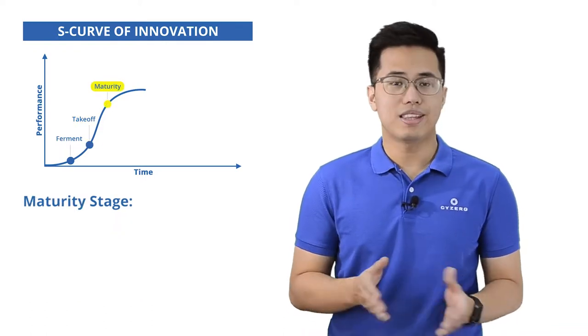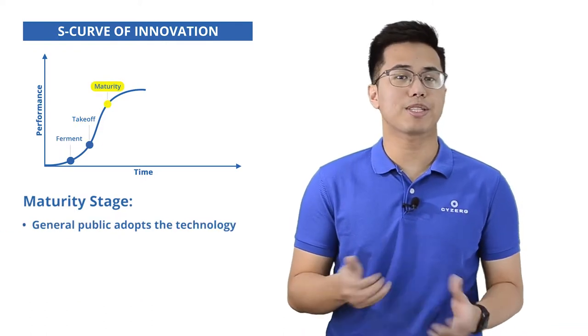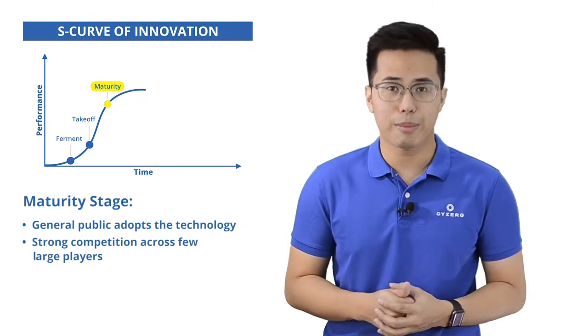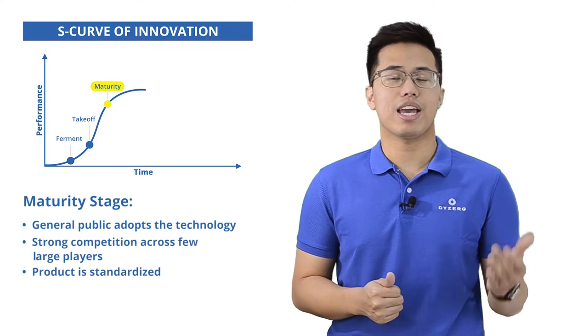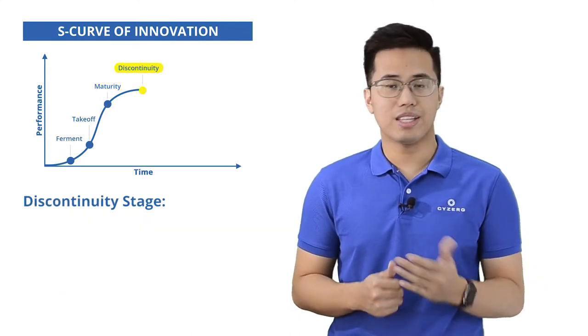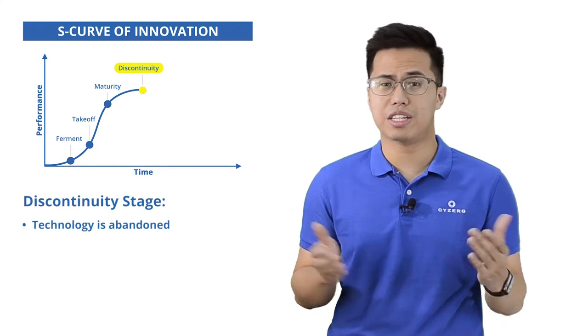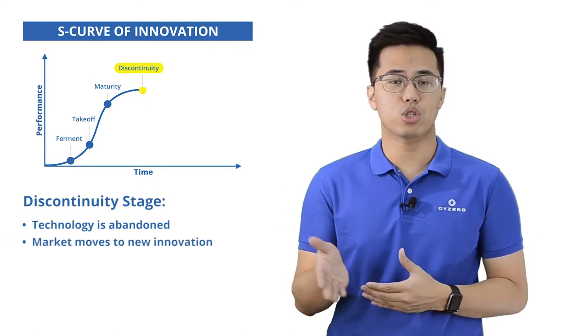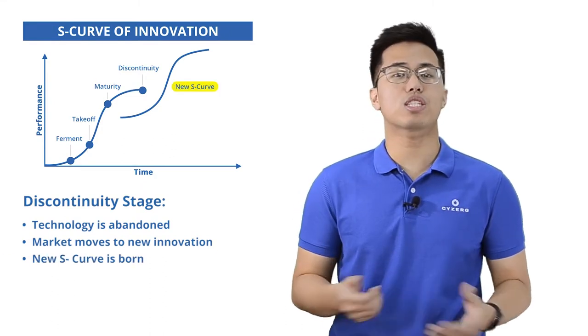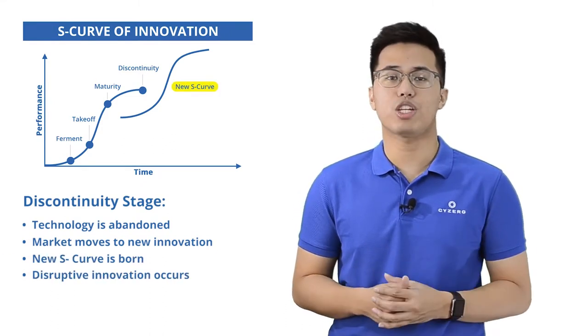Third stage, maturity. This is when the general public adopts the technology. There's very strong competition across few large players, sales reach the physical limit, product becomes standardized, and innovation slows down to very little. Last stage, discontinuity. This time, customers start to abandon the technology and move on to a new solution or innovation, and that results to a new technology life cycle. And so, a new S-curve is born and disruptive innovation occurs.